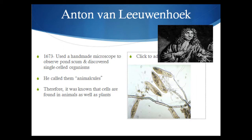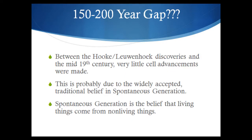The next scientists we are going to discuss come after a 150 to 200-year gap. The reason for this huge gap is that back in this time period, people really believed in a widely accepted belief called spontaneous generation — the belief that living things come from non-living things. For example, people really thought back then that worms and frogs, simple organisms like that, could come from mud and from dust. Today we know that you have to have sexual reproduction in order to get those things. So we're going to talk about one scientist who is really responsible for disproving that theory of spontaneous generation.